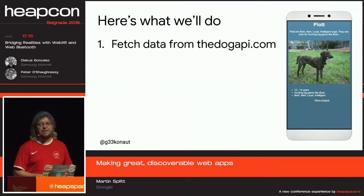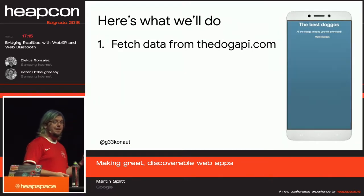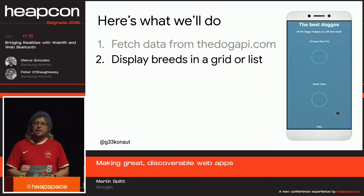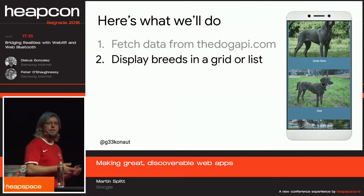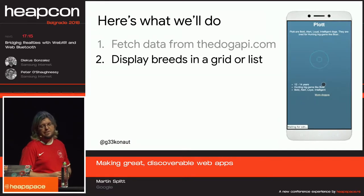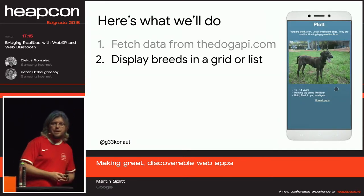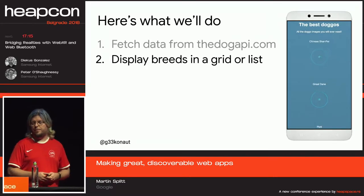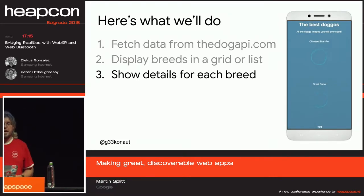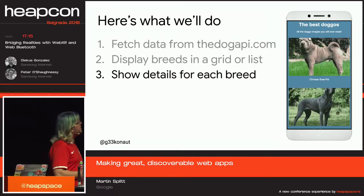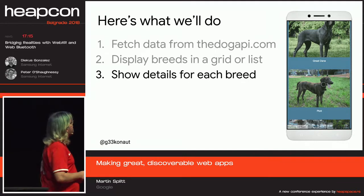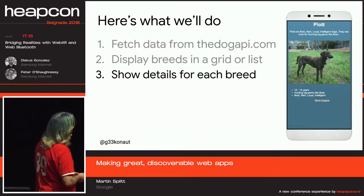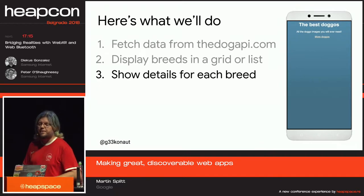I think it's good to have a look at what we're going to do. There's an API that gives us a bunch of different information about dogs and all the wonderful dog pictures. We fetch some data from this one, then display it in a grid or list depending on how much screen estate we've got. On a phone we use a list, but thanks to CSS grids it's really easy to expand to a two-dimensional grid where we have more screen estate. And then we have some more information for each dog — the typical character, what the race was bred for, and how long they usually live.